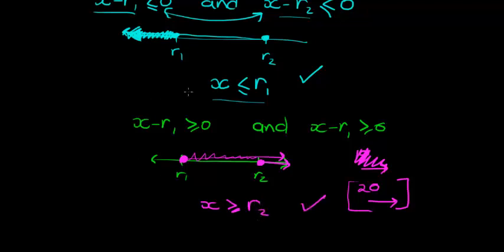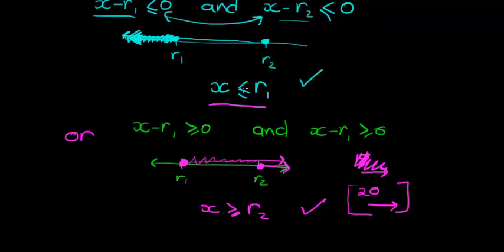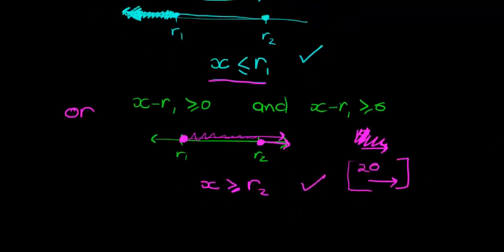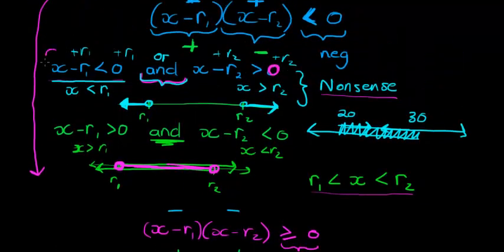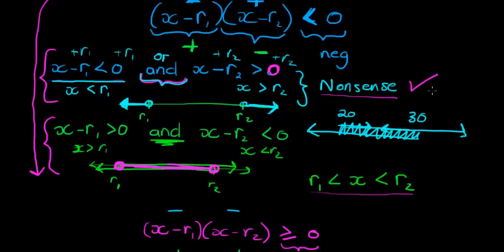So that case is acceptable, giving x ≥ r2. There's an OR between the different solutions: either x ≤ r1 or x ≥ r2. If the first solution hadn't been nonsense in our earlier example, we would have had solution one OR solution two — but since it was nonsense, we only had the one compound inequality solution.